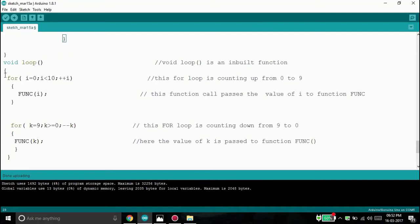Now let us look at our third part of the program. This is the part where we have the code for counting up the digits from 0 to 9 and counting down digits from 9 to 0. This for loop is for counting up from 0 to 9 and this for loop is for counting down from 9 to 0.